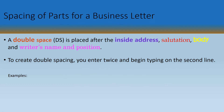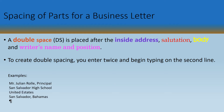A double space is placed after the inside address, salutation, body, and writer's name and position. To create double line spacing, you press Enter twice and begin typing on the second line.